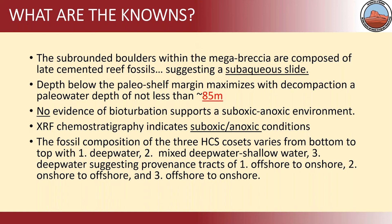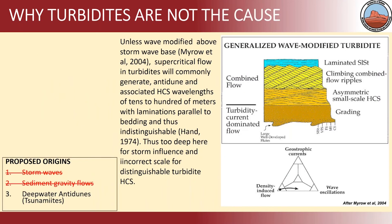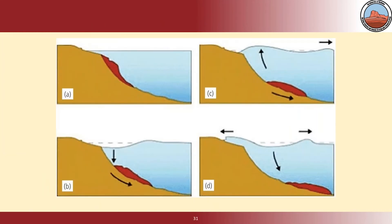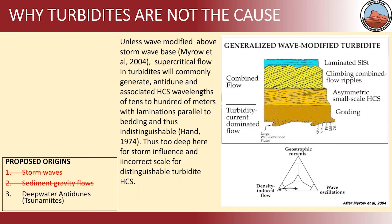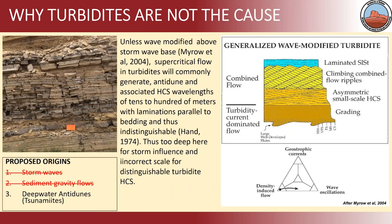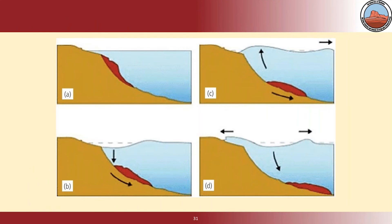Fossil composition shows something very interesting. The first cross-stratification set is deep water. The second appears to be from deep water transitioning to shallow water. The third is offshore and onshore. We believe the slide initiates — sliding down — creates a mass differential. The water is uplifted, it rolls up on the shore, and comes back. This event is recorded in the hummocky cross-stratification sets.